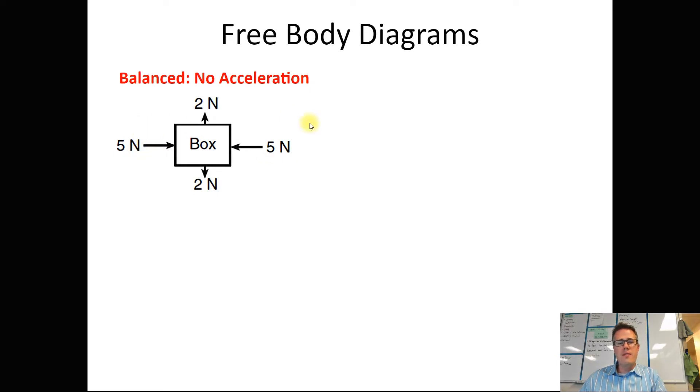In this picture, we have five Newtons on either side and then two Newtons on either side. This box is not going to have any net force. The net force is zero, and if there is no net force, it's not going to start speeding up no matter how heavy the box is.